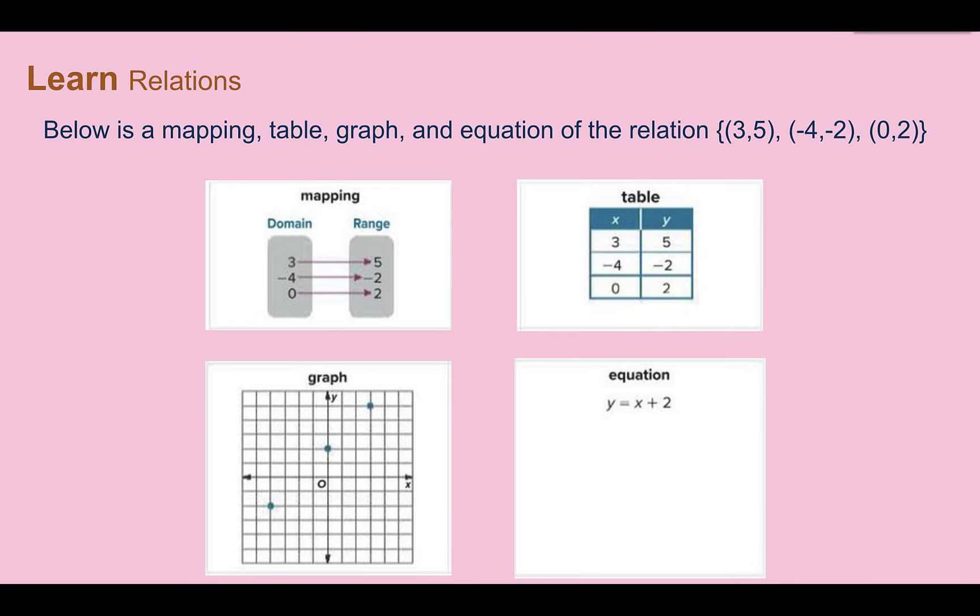Now, let's look at a couple of different ways how a relation might be presented to you. Below, we have a mapping, a table, a graph, and an equation, all for the same relation of (3, 5), (-4, -2), and (0, 2). In our mapping, we can see the domain and the range are labeled. So the domain is our x values. If I put in 3, I get out 5. 3 is paired with 5. Negative 4 was paired with negative 2, and 0 was paired with 2. We can see in the table, it's pretty much written in the same way, but without the arrows.